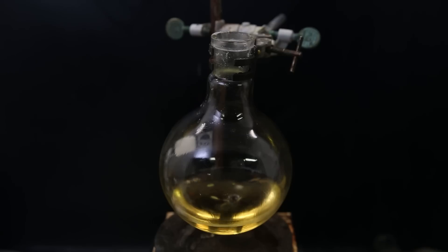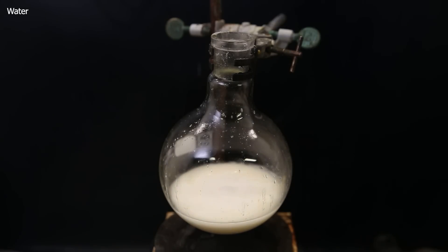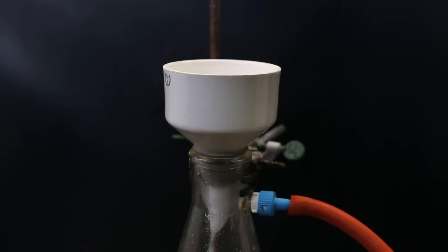I moved this yellow solution to a flask and then added water in which the product is insoluble, causing it to precipitate. So I keep adding water until nothing more precipitates. I then set it up for vacuum filtration again and collect the purified product.